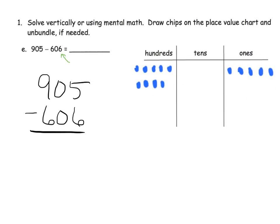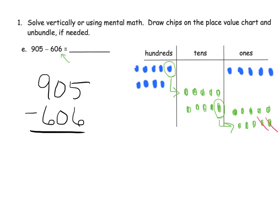We need to subtract six ones, but we only have five ones, so we have to go all the way to the hundreds. We unbundle one hundred to get ten tens — one through ten — then unbundle one of those tens to get ten ones — one through ten. Now we're ready to subtract six ones, leaving us with nine ones.